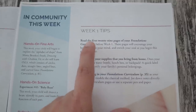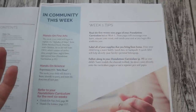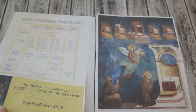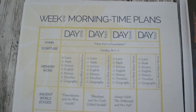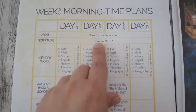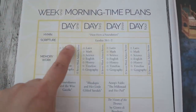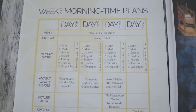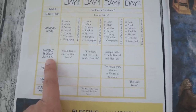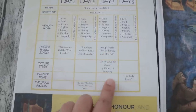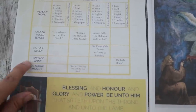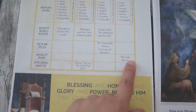Here are Week One tips telling you what you'll be doing in community day, plus morning time plans with a suggested hymn study and scripture to memorize. The memory work is listed and you check off whichever ones you want to do each day. It correlates with the Ancient World Echoes book and tells you what to read every day. There's also a picture study included, plus references to Kings of Rome and Exploring Insects, telling you what to read on those different days.